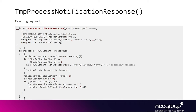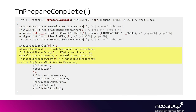There is a function called TmpProcessNotificationResponse that you'll encounter many times when reverse engineering the KTM driver. Any time a state transition happens, this function gets called. The main thing is that a callback is passed along with two arrays that dictate what states the enlistment or transaction might be in, and then the callback is called. Calling PrepareComplete from an enlistment will change the state of the KEnlistment and also transition the underlying transaction.